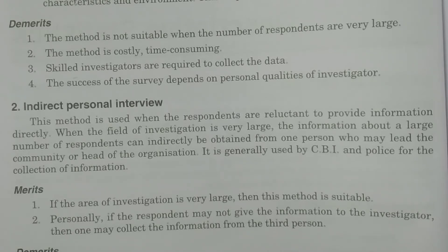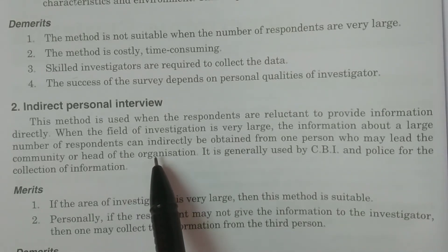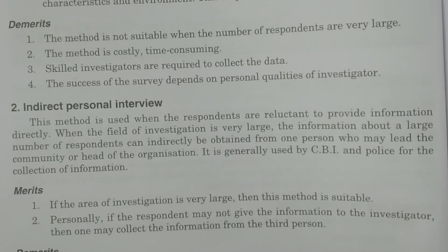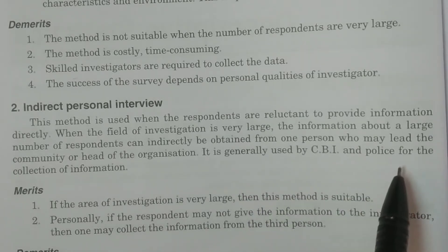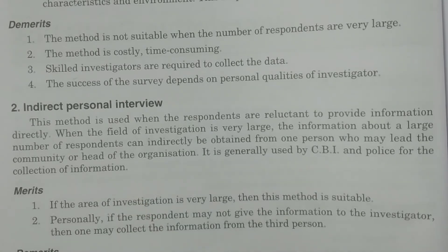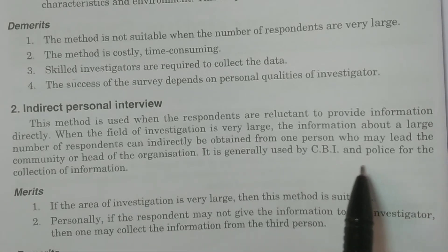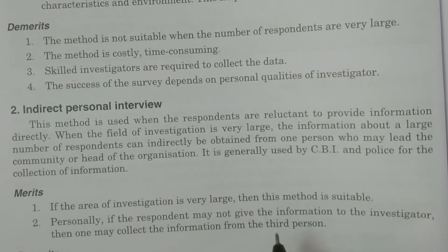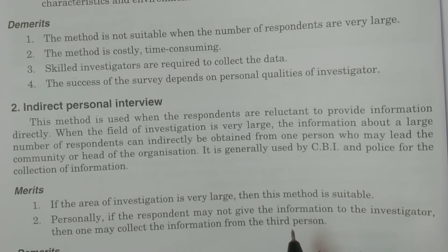For example, one person may represent the entire institution or organization, and the investigator can collect information from that single person regarding various individuals. This method is generally used by the CBI and police for collecting information. They collect information indirectly from a third person who knows details regarding the first person of interest.